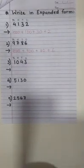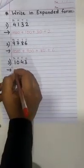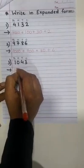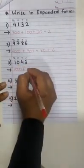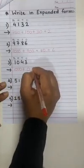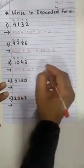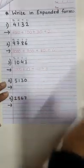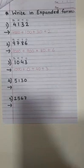Now, let's try the last one with me. The place value of 1 is 1000. The place value of 0, 0 as it is. The place value of 4 is 40. And the place value of 3 is 3. Very good!